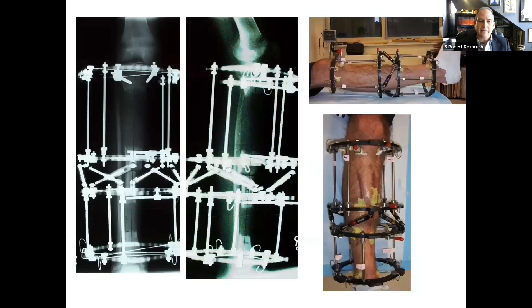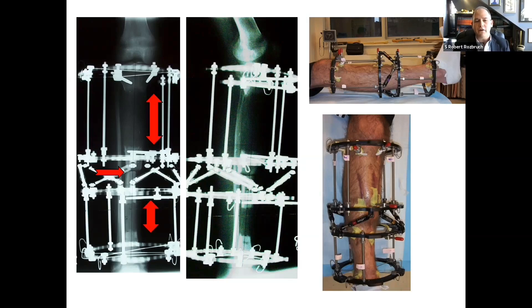At the end of the distraction phase there is docking, and you can see that's the connection point. What you're looking at in those two areas are the regenerates of the proximal and distal tibia. The proximal tibia tends to heal a little bit more robustly, so I planned more lengthening in that area and less lengthening in the distal tibia.